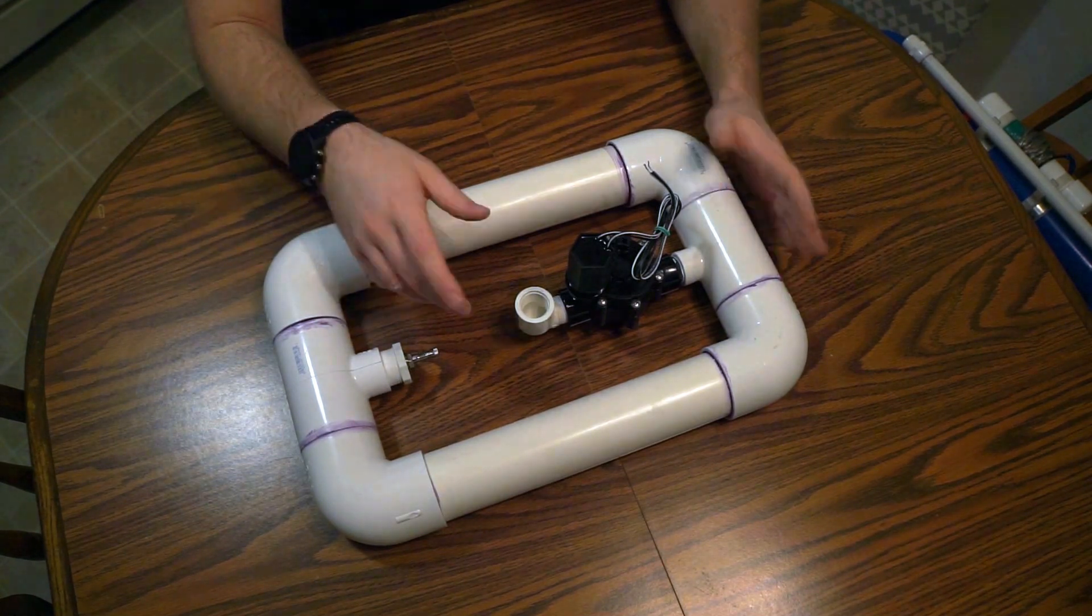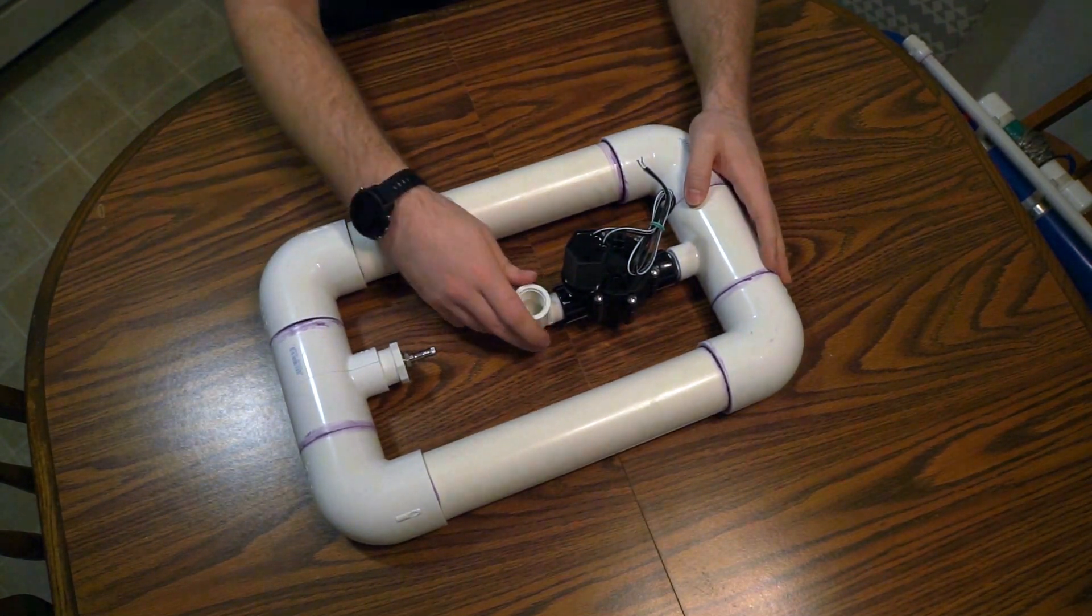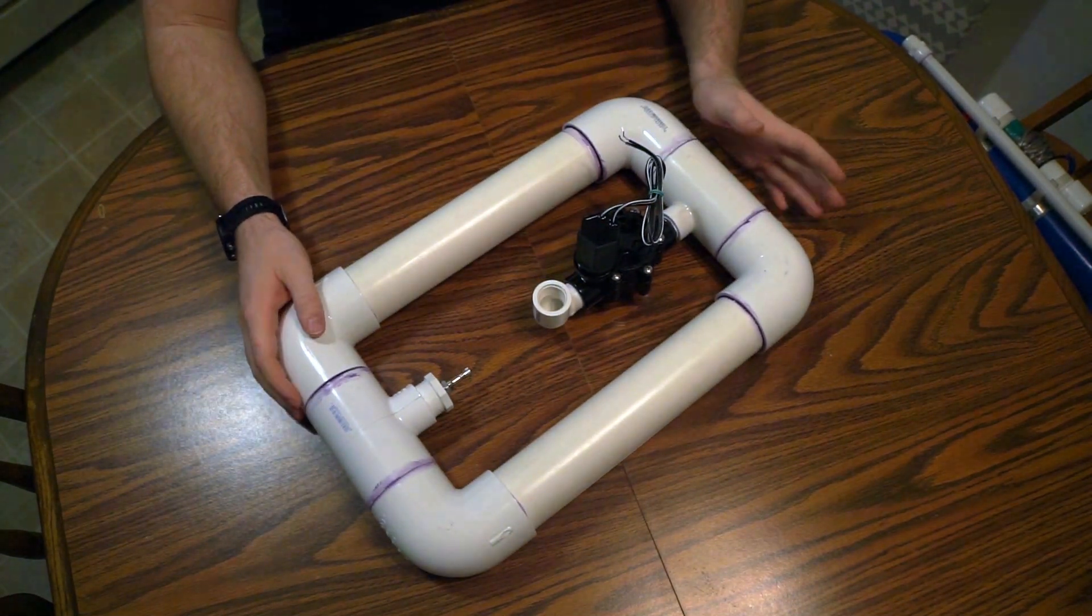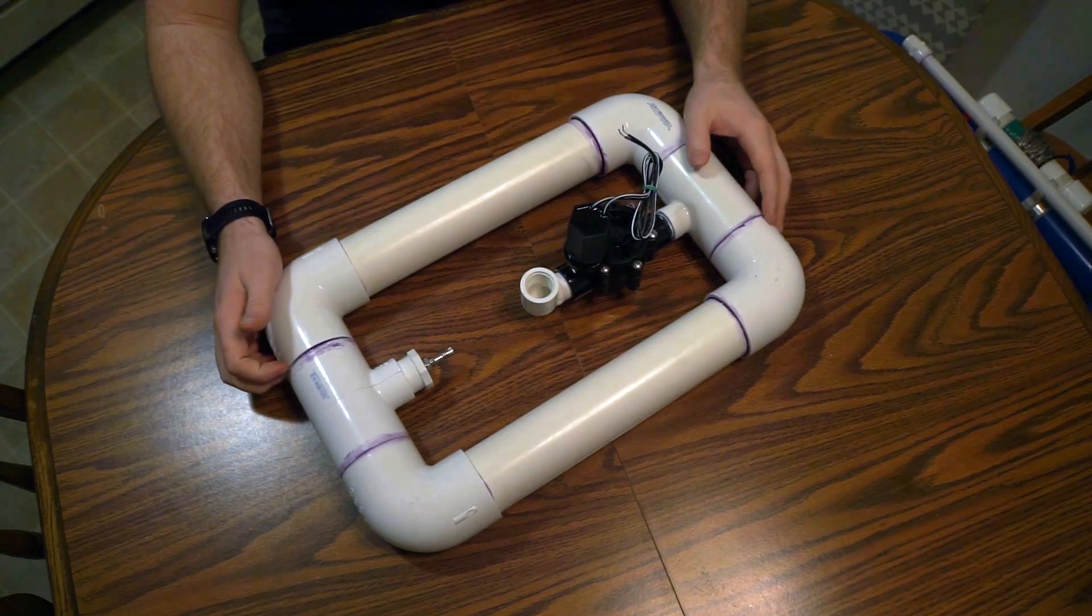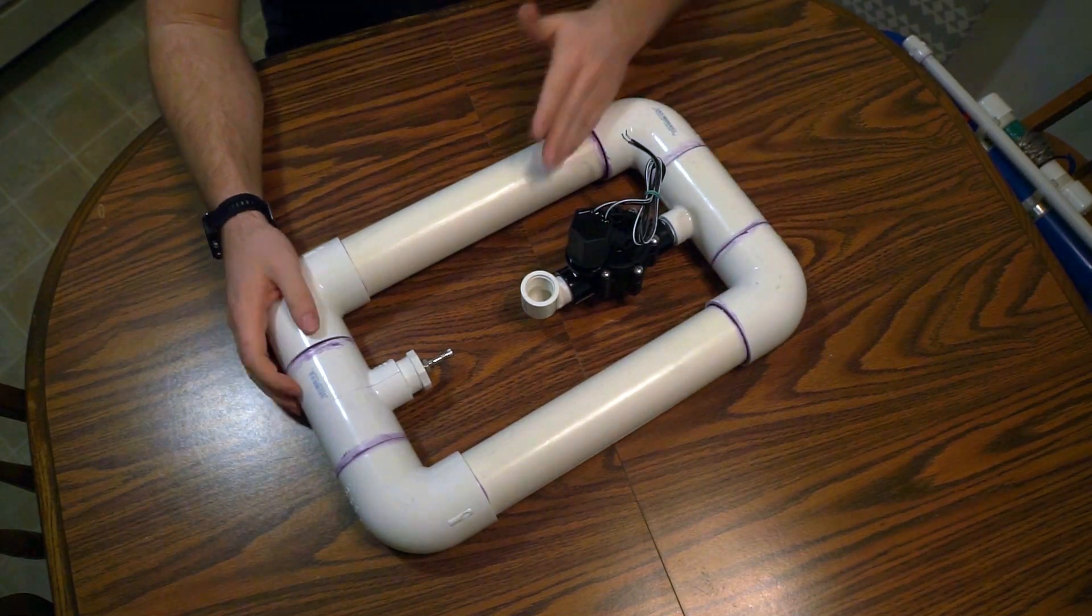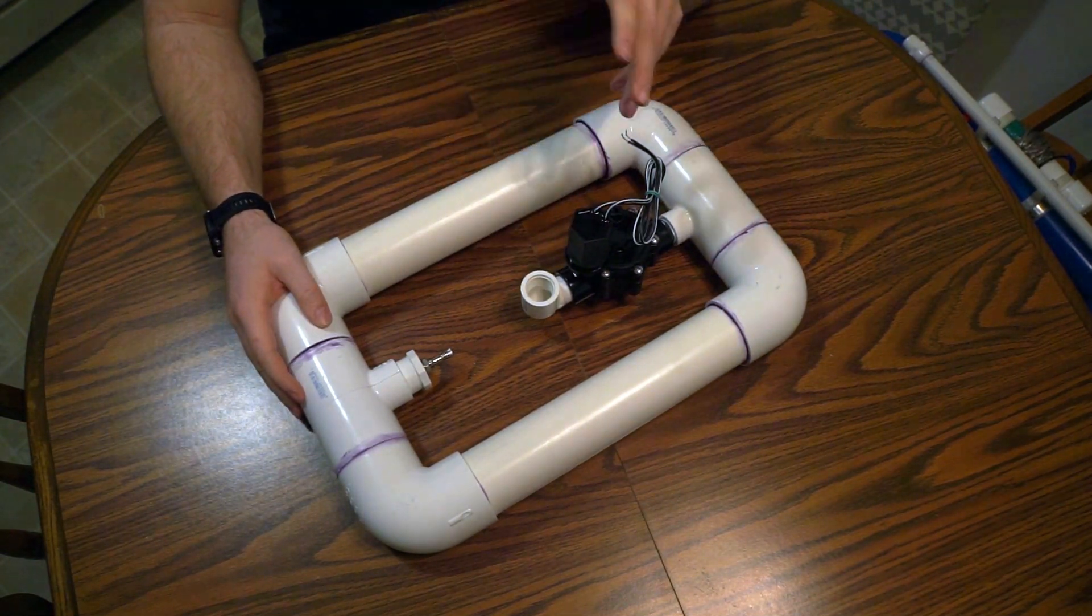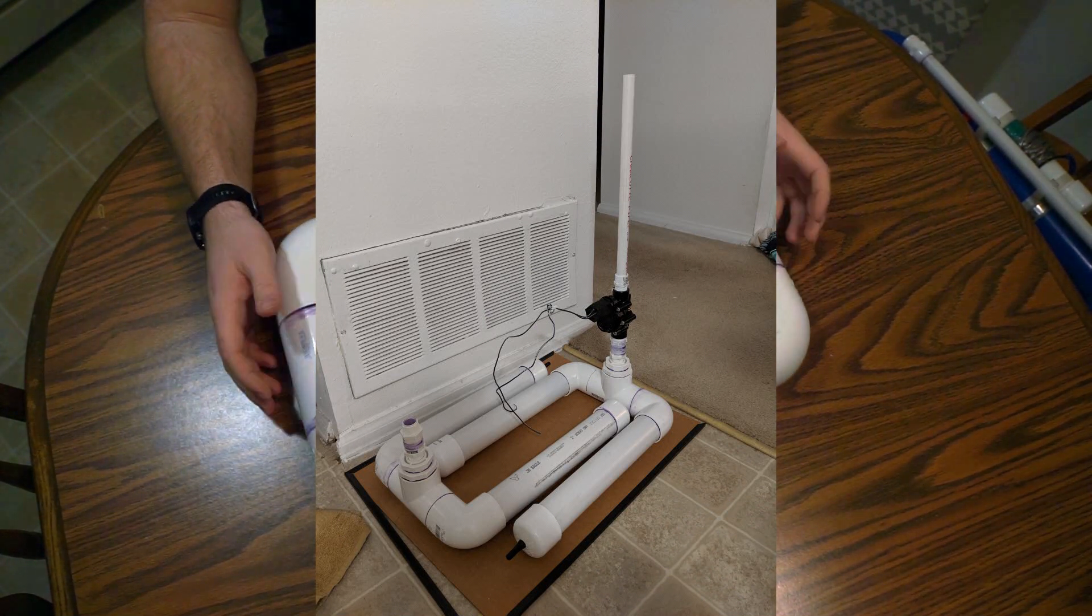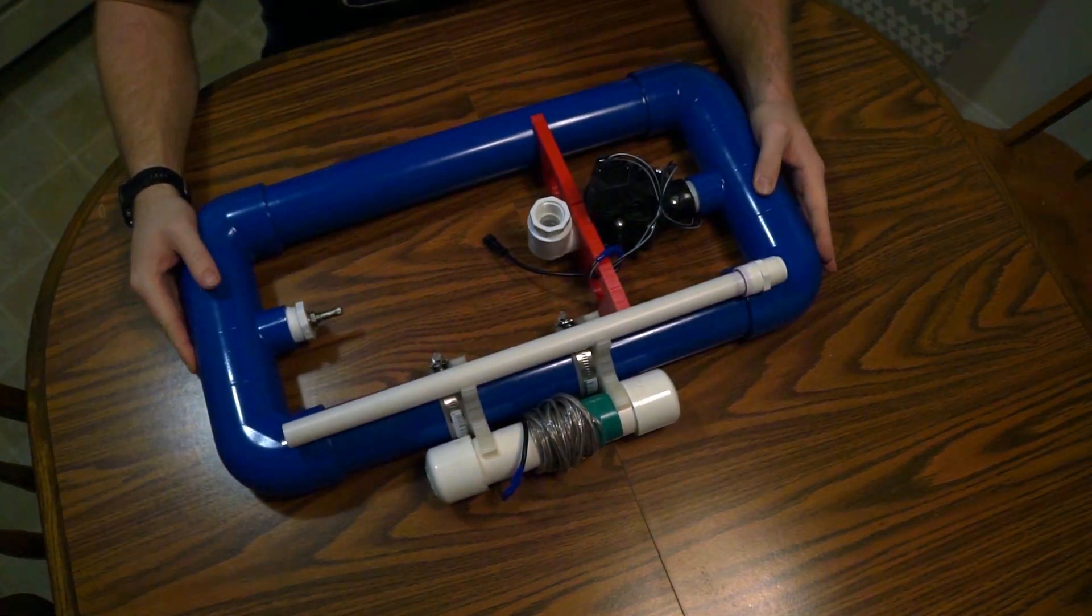But it also maintains the ability to rotate back and forth, so you can aim the rocket if you want to. That was something that some of the people wanted to do, so they still have that ability. Whereas with version 2 they did not, the sprinkler valve just came straight up and out.